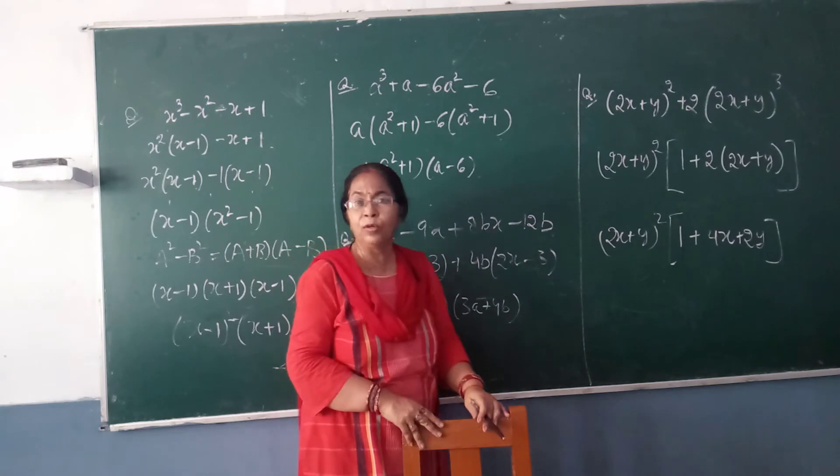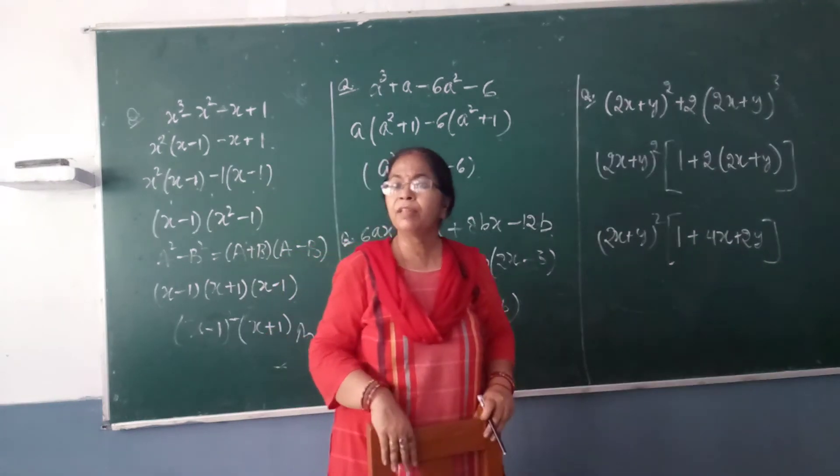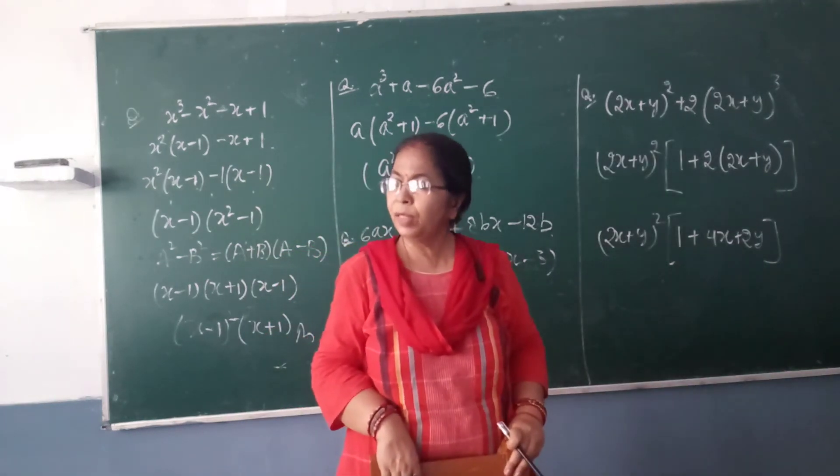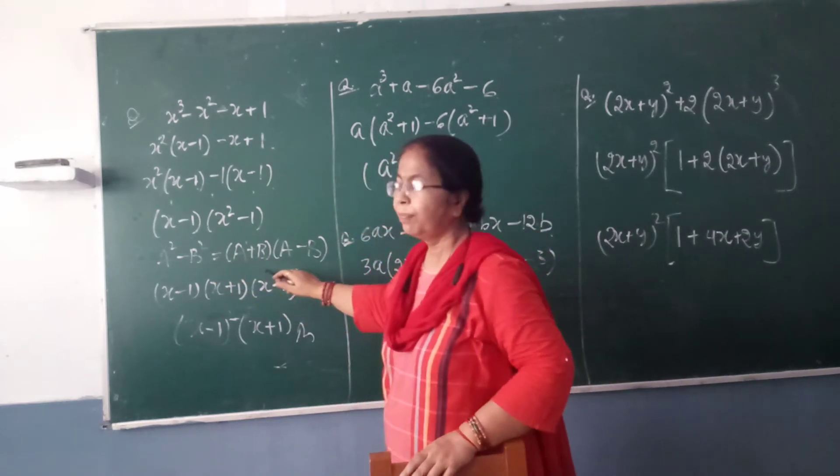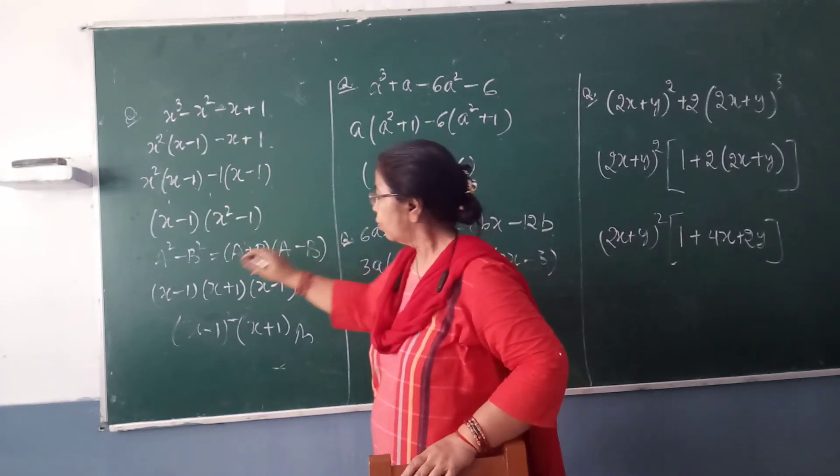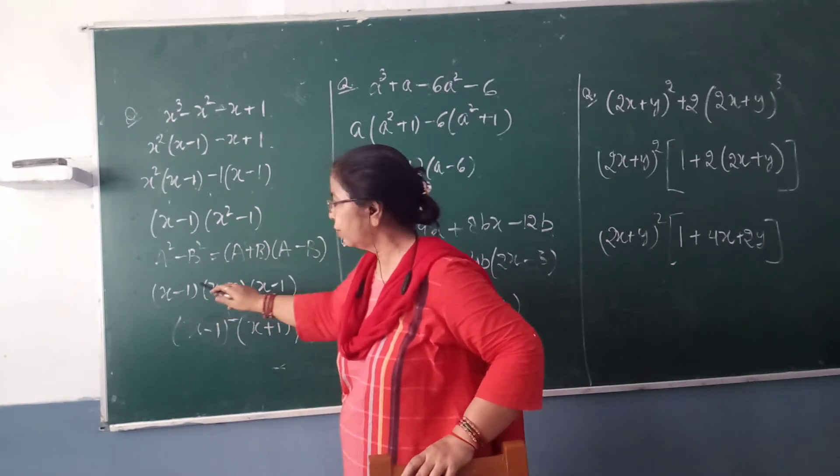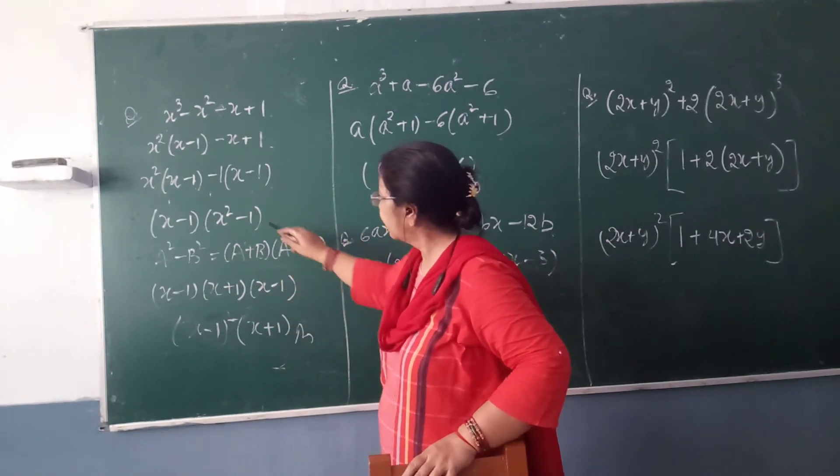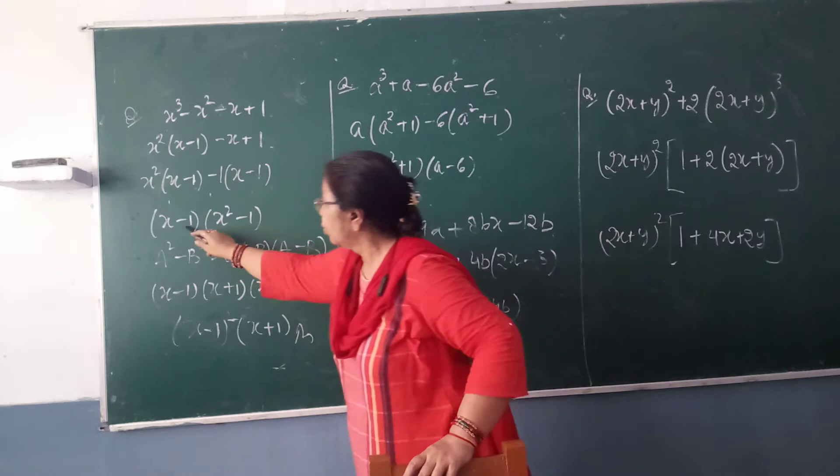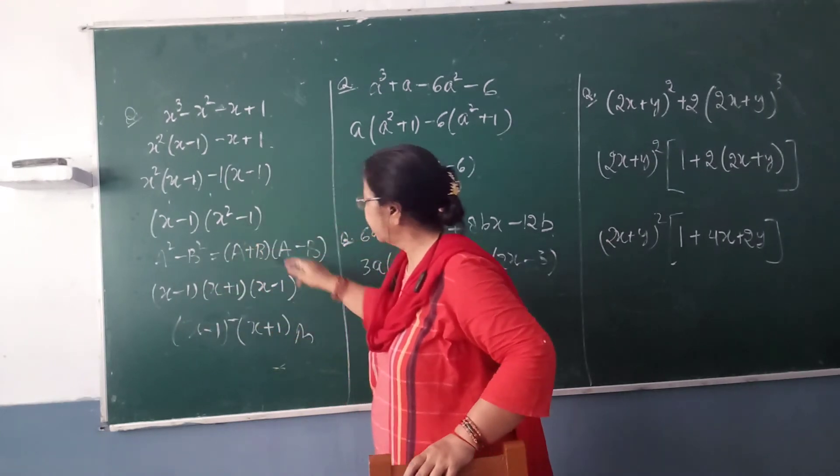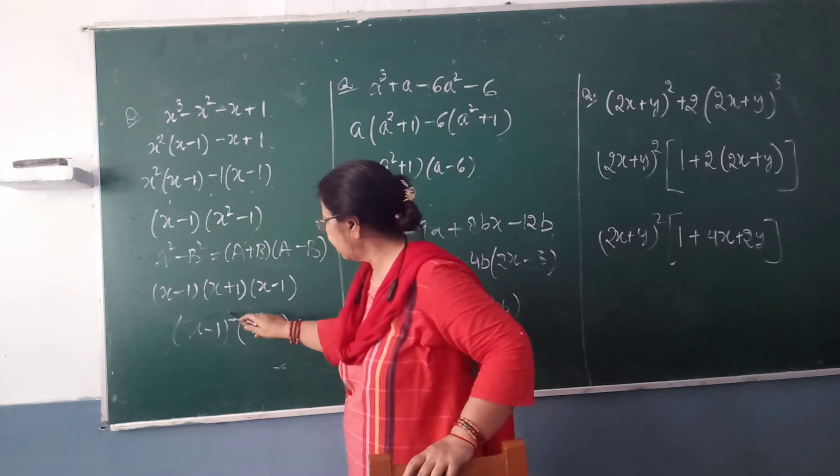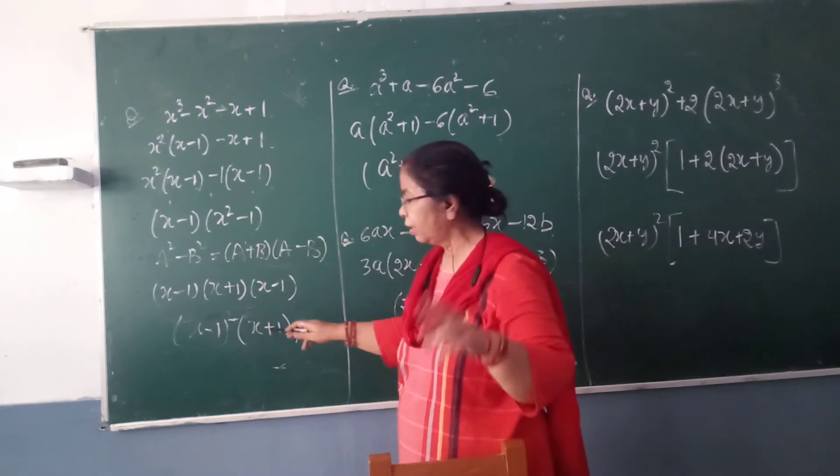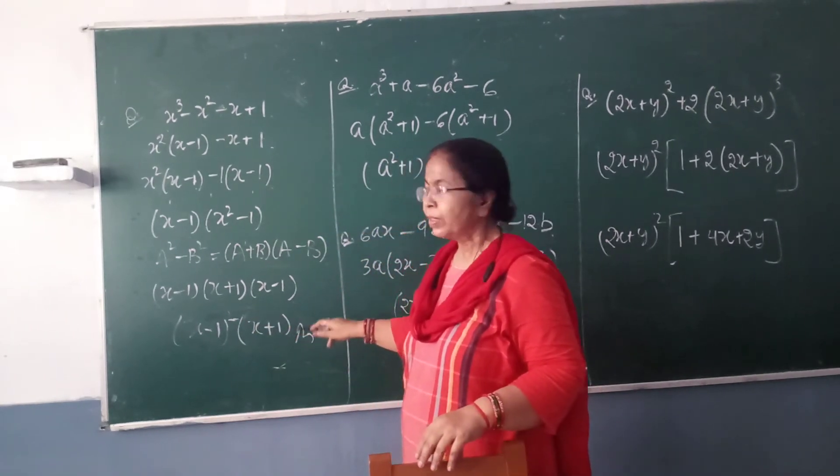What formula? a² - b² is equal to (a + b)(a - b). So what do we need? (x - 1)(x + 1) and then again (x - 1). So x - 1 is correct because two times is coming, and x + 1. This is the solution of this question.